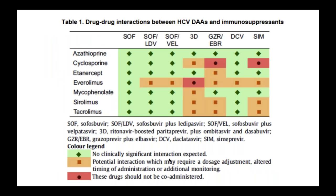Drug-drug interactions are important. A table shows interactions between directly acting antiviral agents and immunosuppressive agents, with immunosuppressive agents in the left column and antivirals in the top row. Green indicates no clinically significant interaction; yellow indicates potential interaction requiring dose adjustment, altered timing of administration, or additional monitoring; and red means those combinations should not be administered.